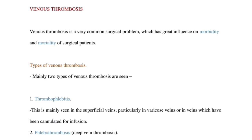Mainly there are two types of venous thrombosis. The first one is thrombophlebitis, which is mainly seen in the superficial veins. In these cases, venous thrombosis is associated with an acute inflammatory response giving rise to pain, local swelling, redness and tenderness.